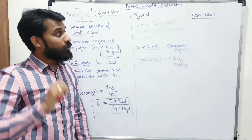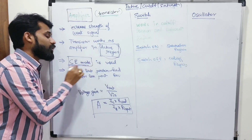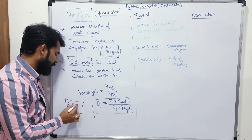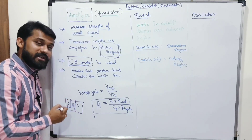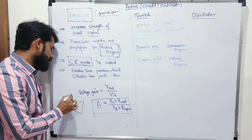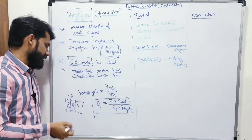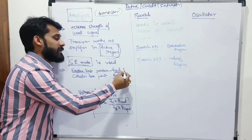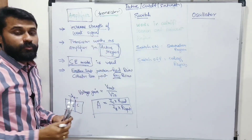In the transistor used as an amplifier, there are two junctions: the emitter-base junction and the collector-base junction. For the transistor to work as an amplifier, the emitter-base junction must be forward biased, and the collector-base junction must be reverse biased. These are the essential conditions you must know.